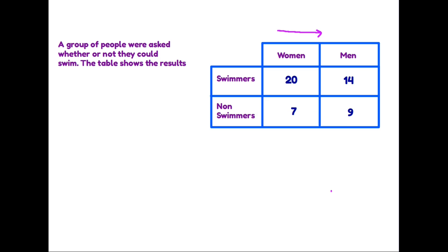So let's have a look at a couple of questions that you might get asked from a table like this. And here's the question: how many people could swim all together? So in this case you are looking for swimmers which is this row here and amongst the swimmers there are 20 women and 14 men. So you would need to add these up. 20 plus 14, 34 people can swim.